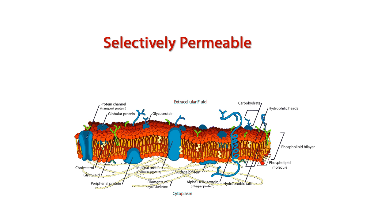The cell membrane, or plasma membrane, is described as a fluid mosaic — fluid because of its hydrophobic integral components, such as lipids and membrane proteins, that move laterally or sideways throughout the membrane. That means the membrane is not solid, but more like a fluid.